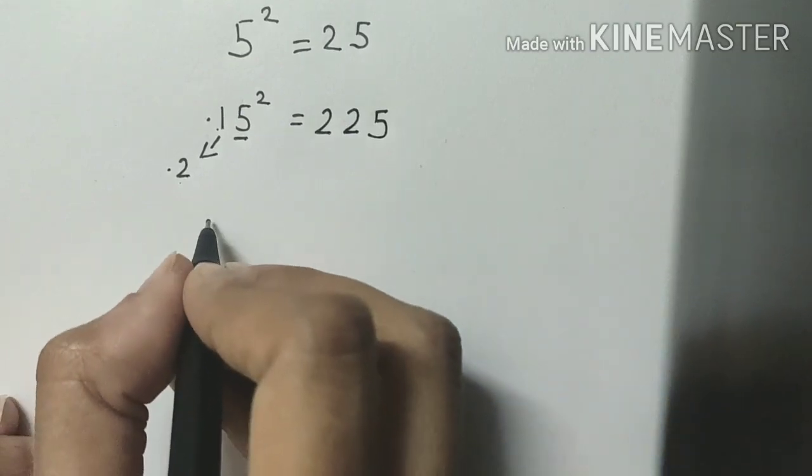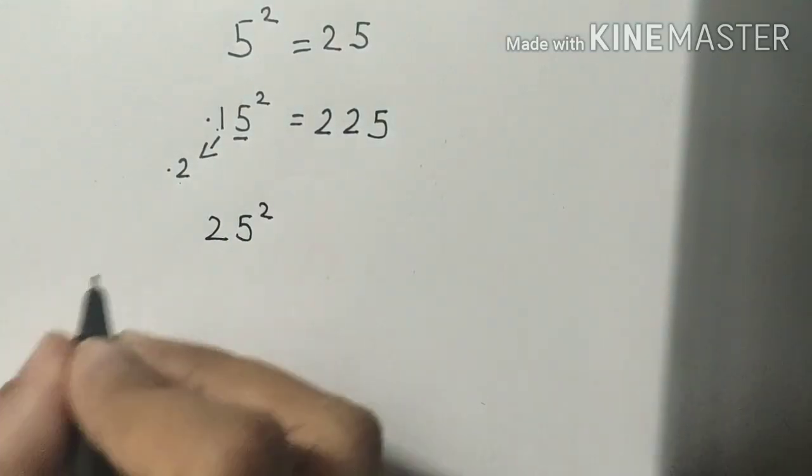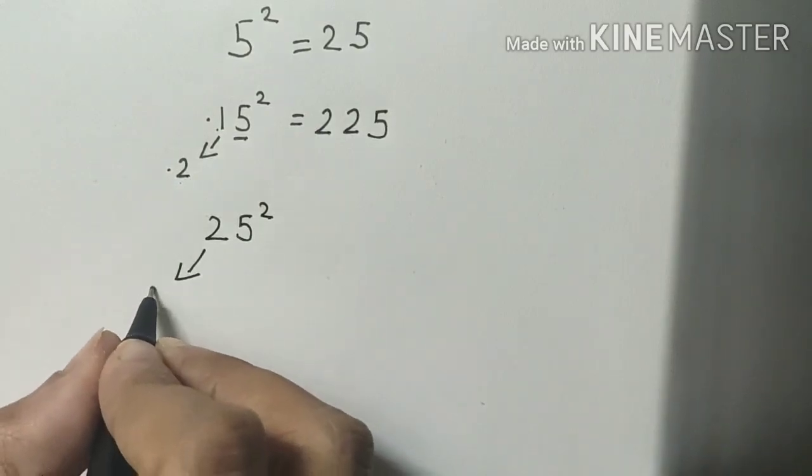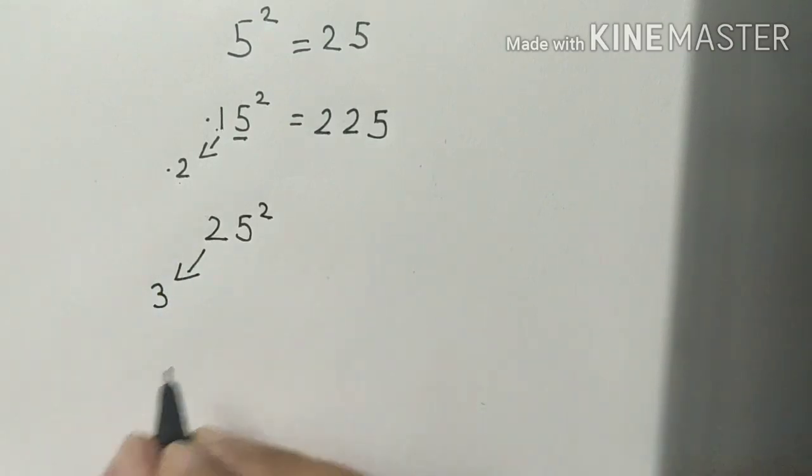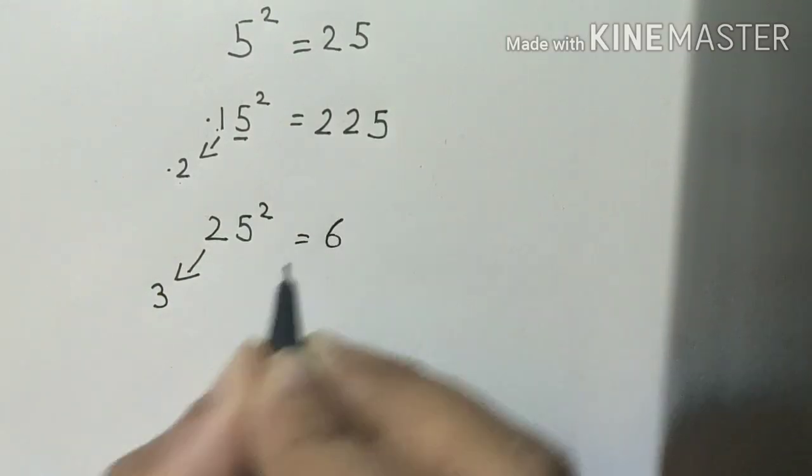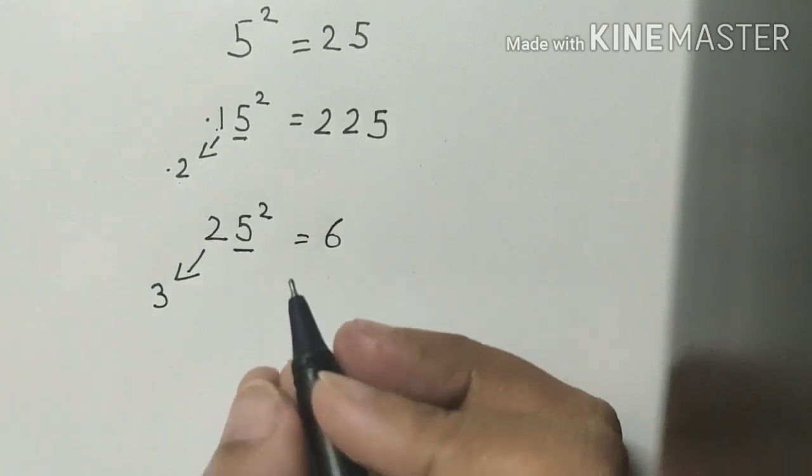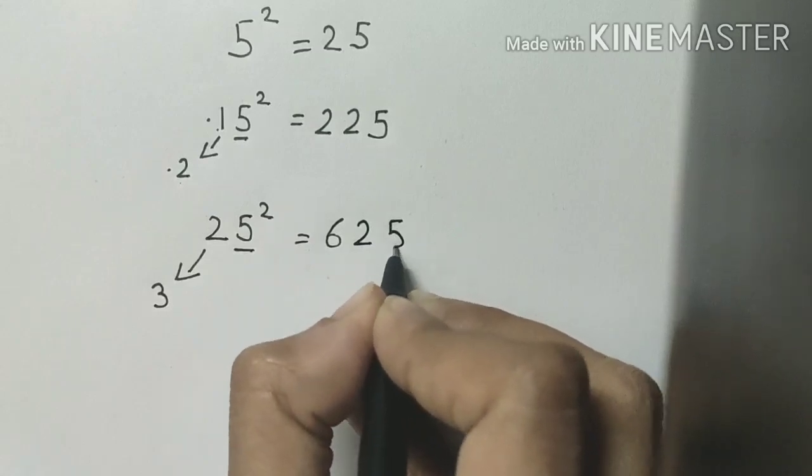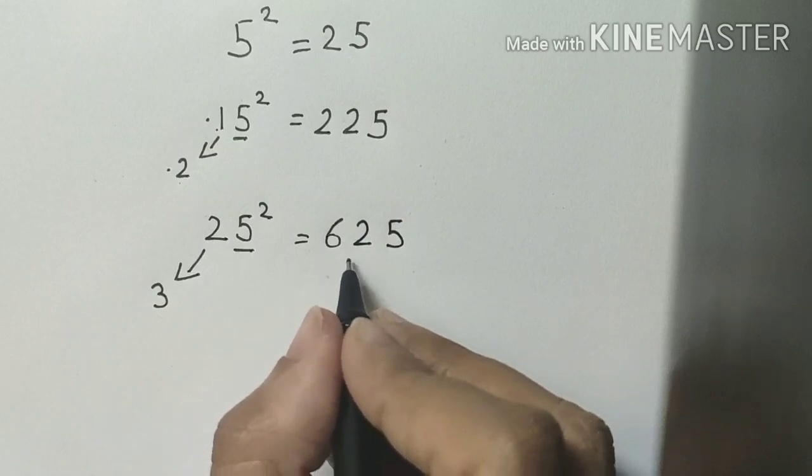Let's take another example which is 25. So what comes after 2? After 2 comes 3, and 3 × 2 is 6, and the square of 5 is 25. So write down 25 here. This is the square of 25, which is 625.